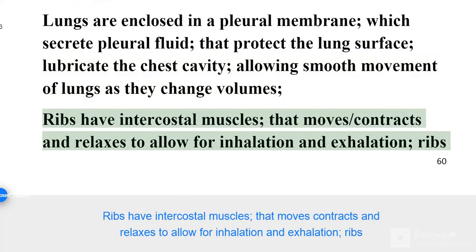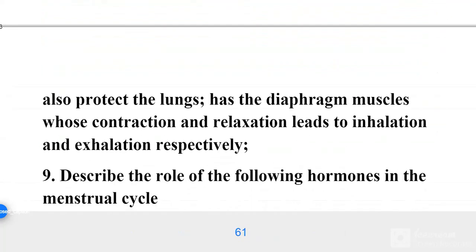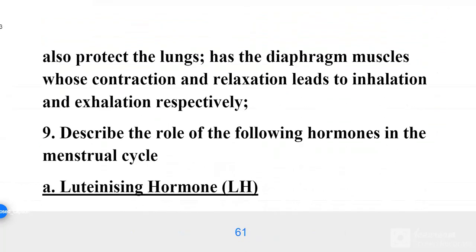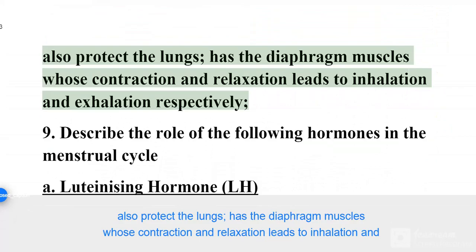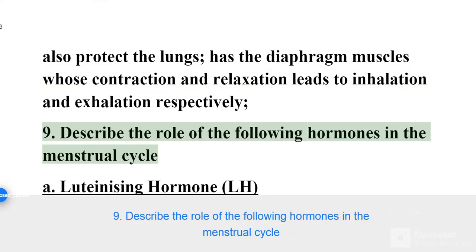The ribs have intercostal muscles that contract and relax to allow for inhalation and exhalation. The ribs also protect the lungs. The diaphragm muscles, through their contraction and relaxation, lead to inhalation and exhalation respectively.